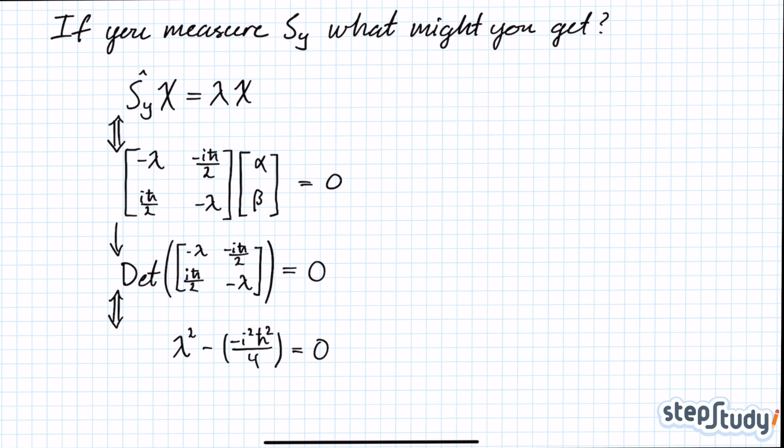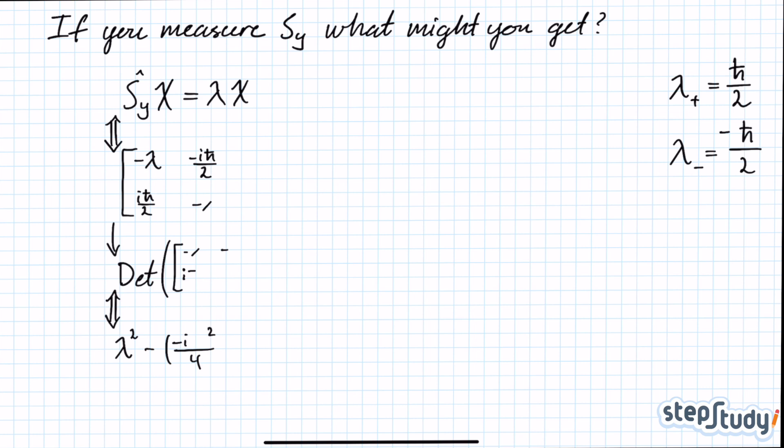I won't go into detail about how to solve this quadratic equation. I'll just tell you that the two roots are plus h-bar over 2 and minus h-bar over 2. These are the two eigenvalues you can get if you measure spin in the y-direction.